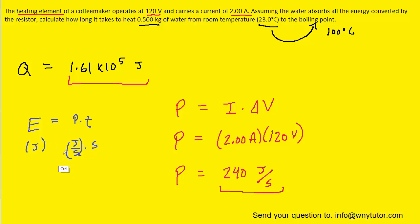Now we have the energy and the power, so we just plug into this equation. When we divide both sides by 240 joules per second, we find the time is roughly 671 seconds.